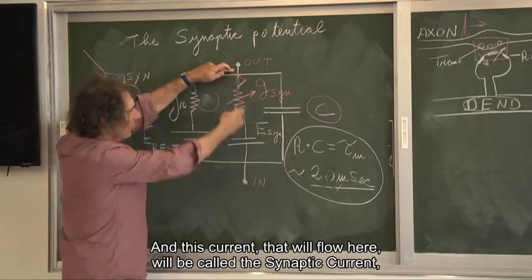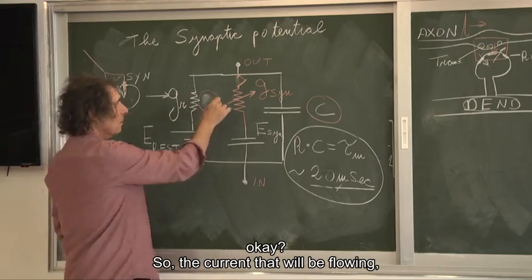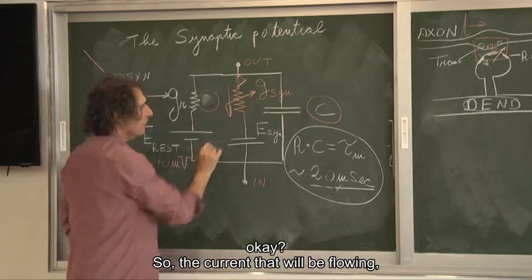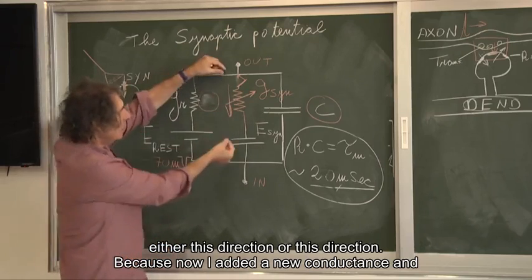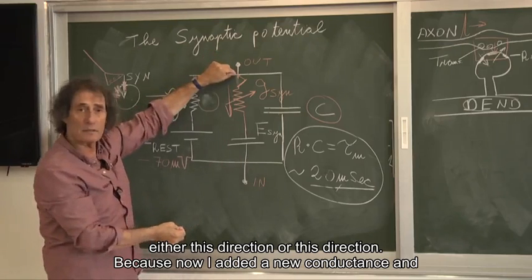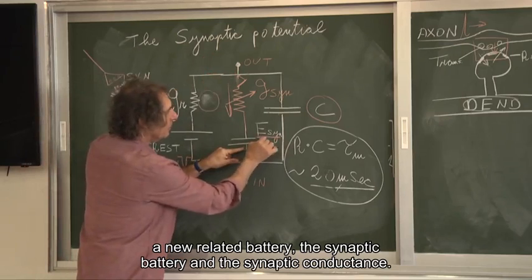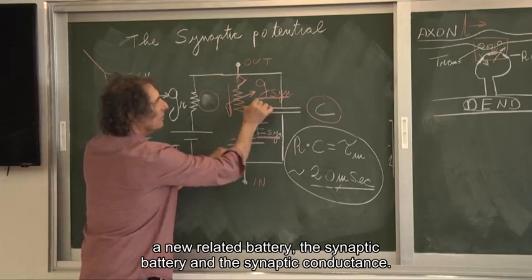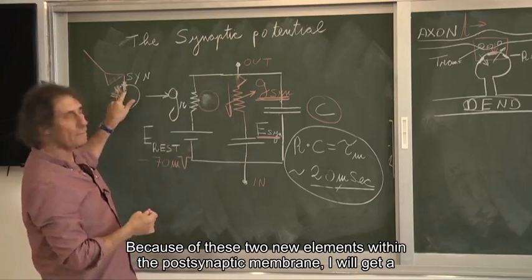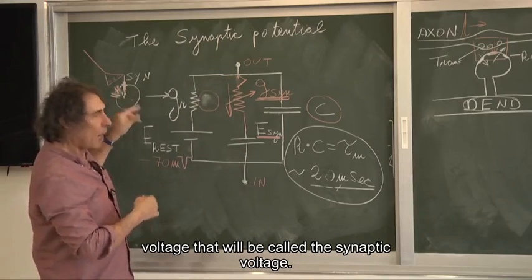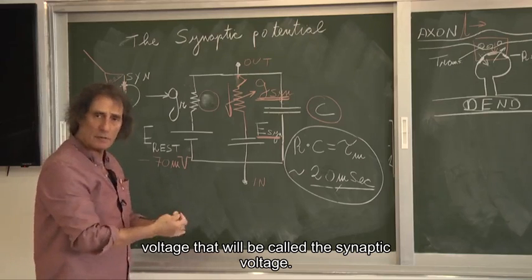And this current that will flow here will be called the synaptic current. So the current that will be flowing either this direction or this direction, because now I added a new conductance and a new related battery, the synaptic battery and the synaptic conductance, because of these two new elements within the postsynaptic membrane, I will get a voltage that will be called the synaptic voltage.